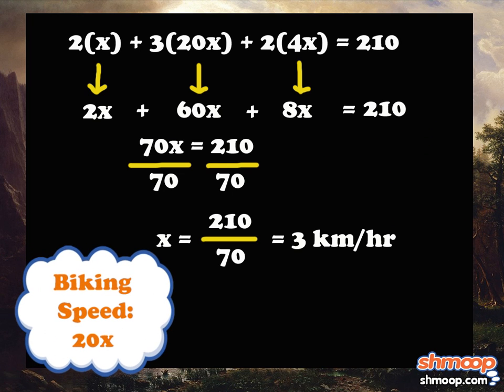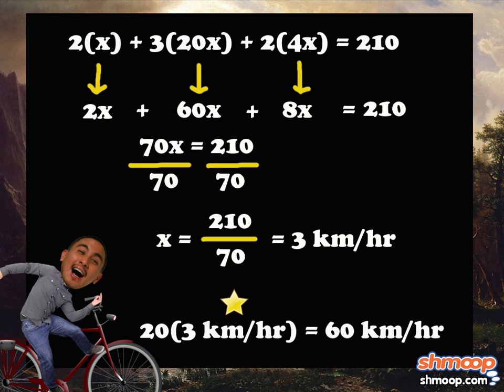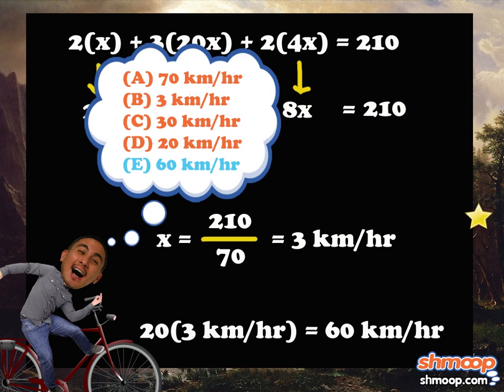Remember, we're looking for Kavi's biking speed, which is 20X. So we multiply 20 by our 3 kilometers per hour to get 60 kilometers per hour, and our answer is E.